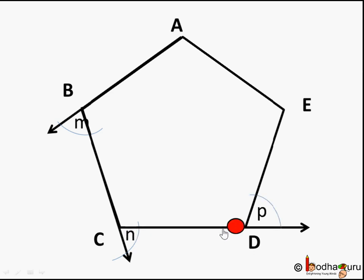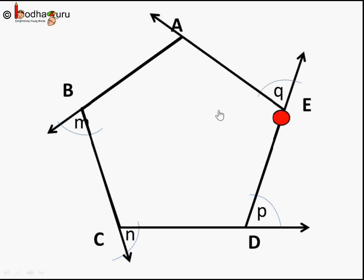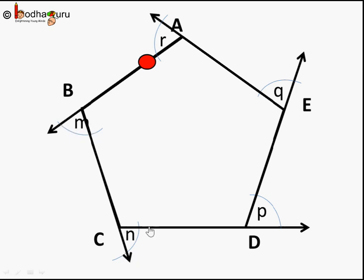I start walking on this side. Then as soon as I reach this point, I need to turn again to walk on this line — I need to walk on the boundary. So I turn by angle P and start walking on this boundary of the pentagon-shaped park. As soon as I reach point E, I turn by exterior angle Q to start walking this way. And when I reach point A, I turn by exterior angle R to start walking here until I reach my starting point. So I walked on the boundary of this pentagon, turning five times: by angle M, angle N, angle P, angle Q, and angle R.